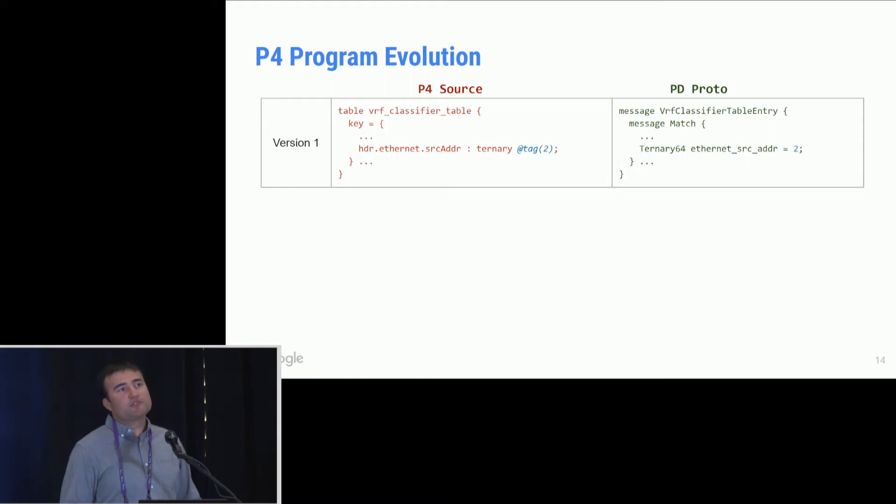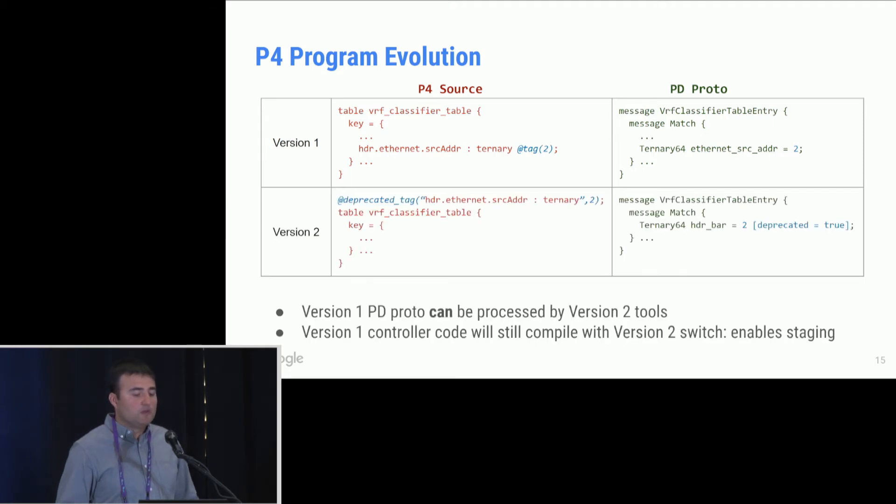Now, what about program evolution? So earlier we saw the problem with PI evolution. How do we solve that in the PD world? So on the left-hand side, I've taken a snippet out of the VRF classifier table. And here we see a key with the match on the ethernet source address. And you'll notice here that we have a new tag, tag two. And this tag is what determines the field value, the field ID that is defined on the proto side. So let's say, going back to the same example, in version two, we decide that we do not want, in my VRF table, we do not want to match on the ethernet source address. So how do I reflect that in my PD proto? So we do that by not removing, well, we will remove this particular match field from the key, but we want to add an annotation that marks that this particular match is now deprecated.